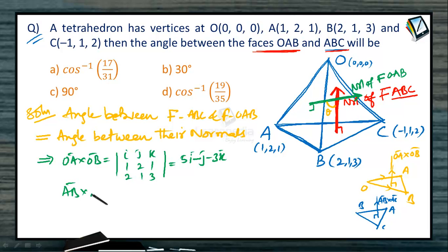Similarly, if AB cross AC is taken, then I will get i, j, k and (-2, -1, 1) and (-1, 1, -2), which equals i minus 5j minus 3k.